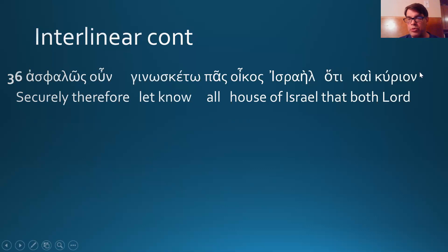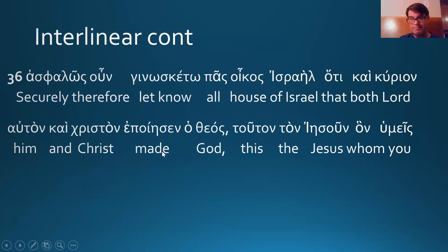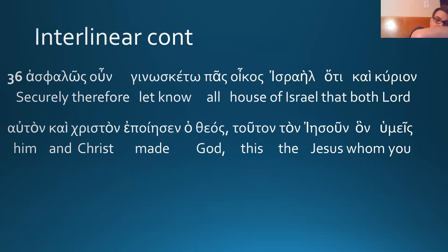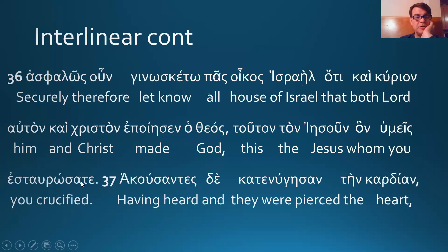That — noun clause. 'That both Lord' — we have a kai...kai, which suggests 'both...and.' Both Lord, him, and Christ made God. Again, Hebrew order, interesting. 'This the Jesus' — so God made him, this is the direct object, and then this is a double accusative. It's like a rock skipping across the pond: God made him Lord Christ. And then 'this' is in apposition to 'him' — namely, this Jesus — demonstrative pronoun. Whom — relative pronoun — you crucified. This is aorist because of the sigma alpha. It's got a nice little augment of the aorist indicative there.